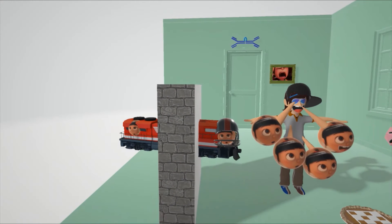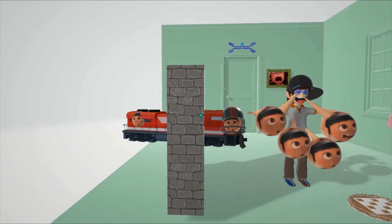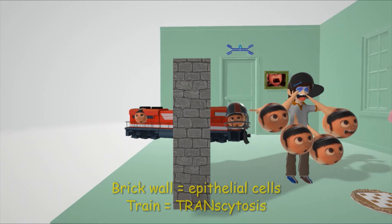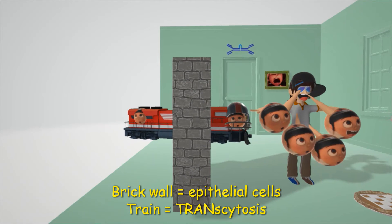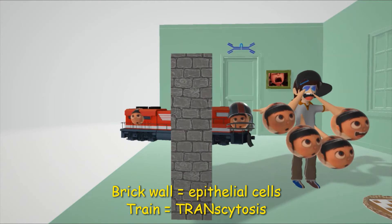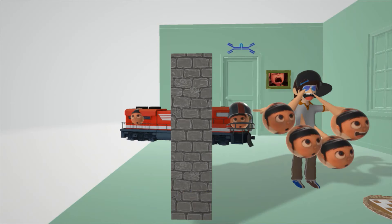There's a train going through this brick wall that looks like epithelial cells — the brick wall represents epithelial cells, and the train going through represents transcytosis. IGA crosses epithelial cells by transcytosis.